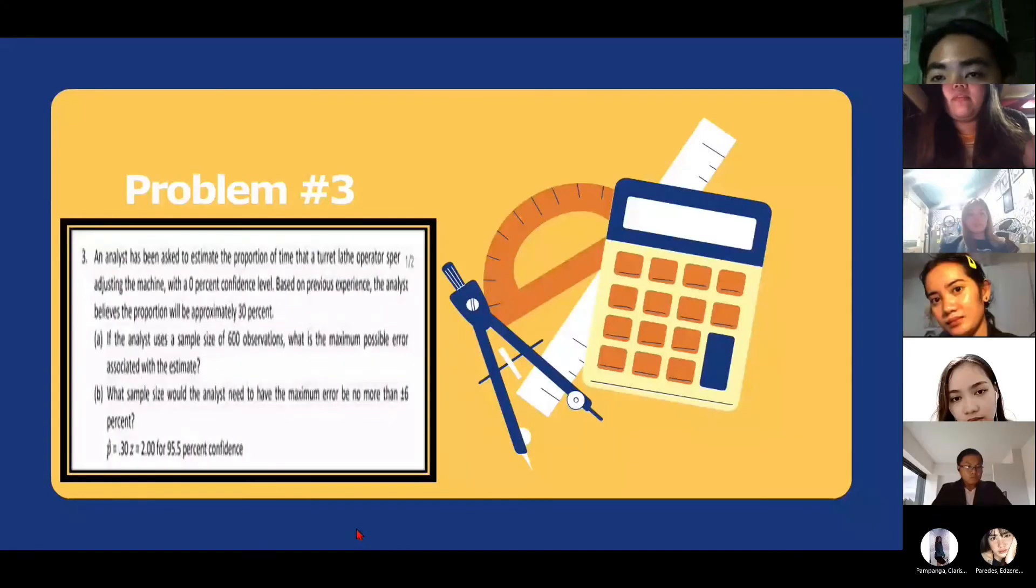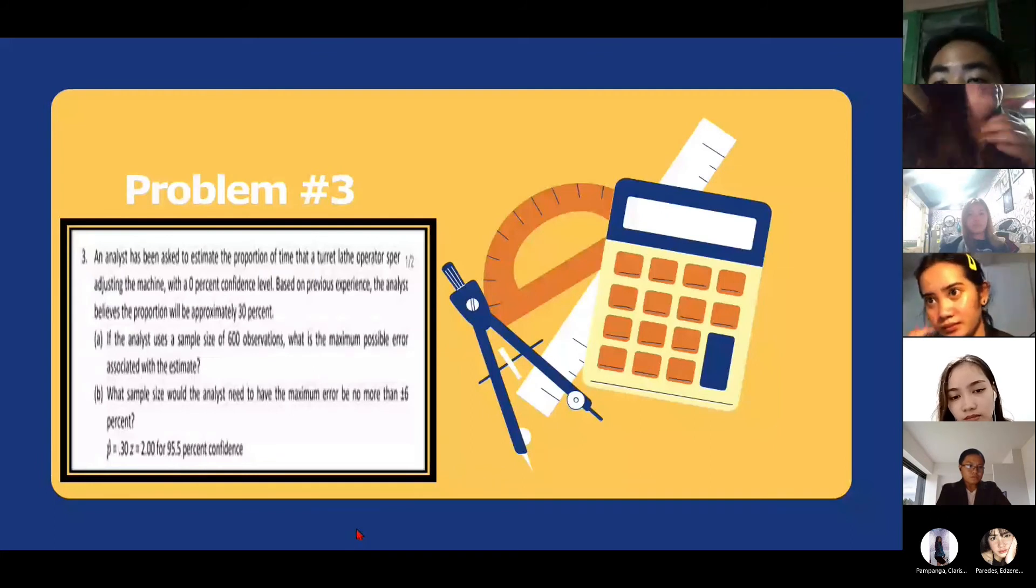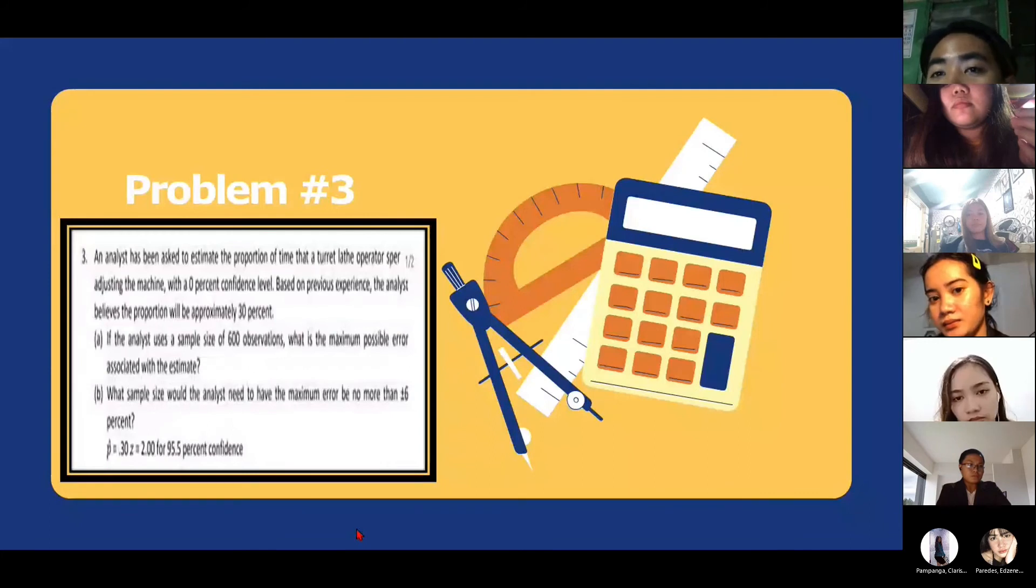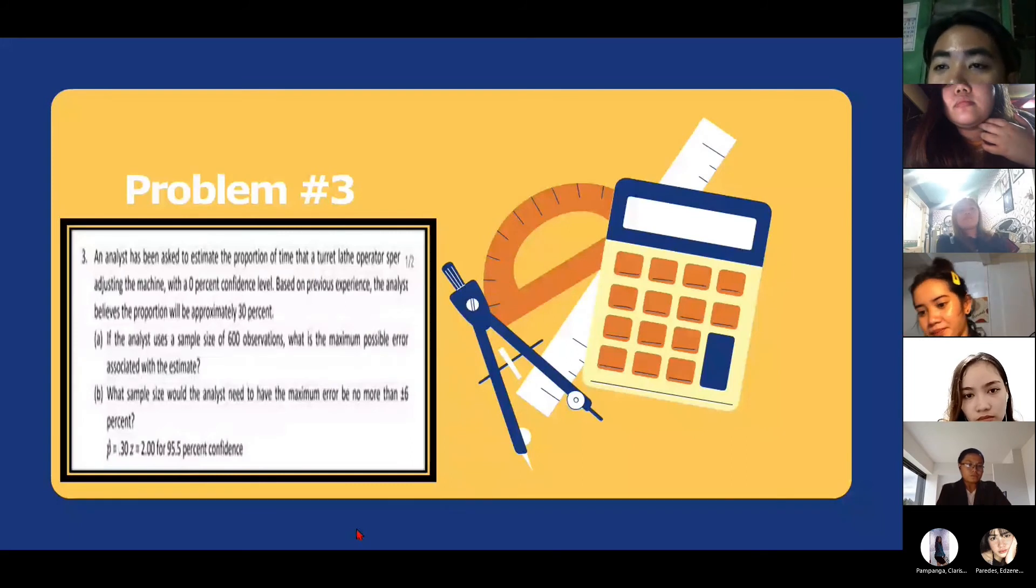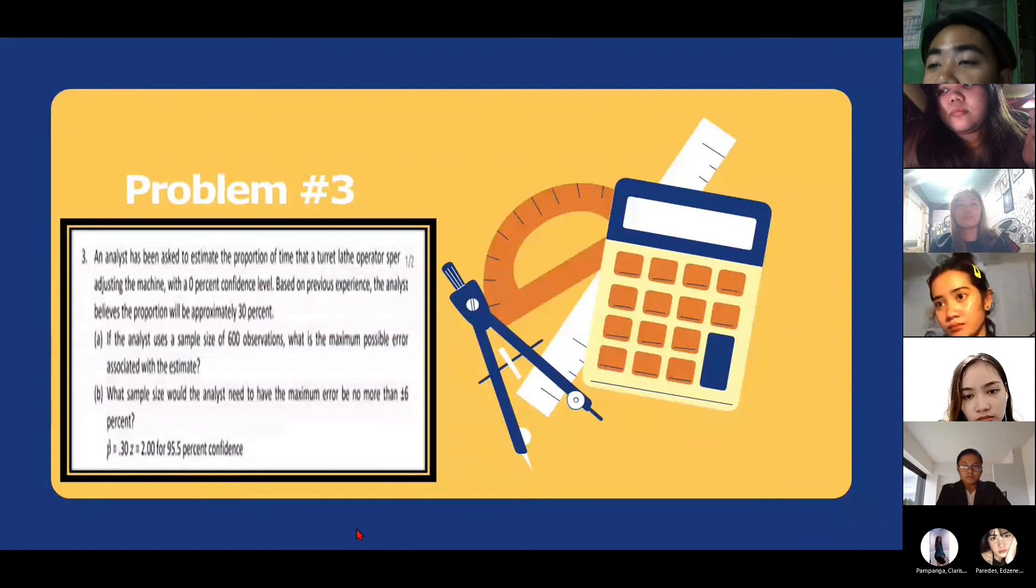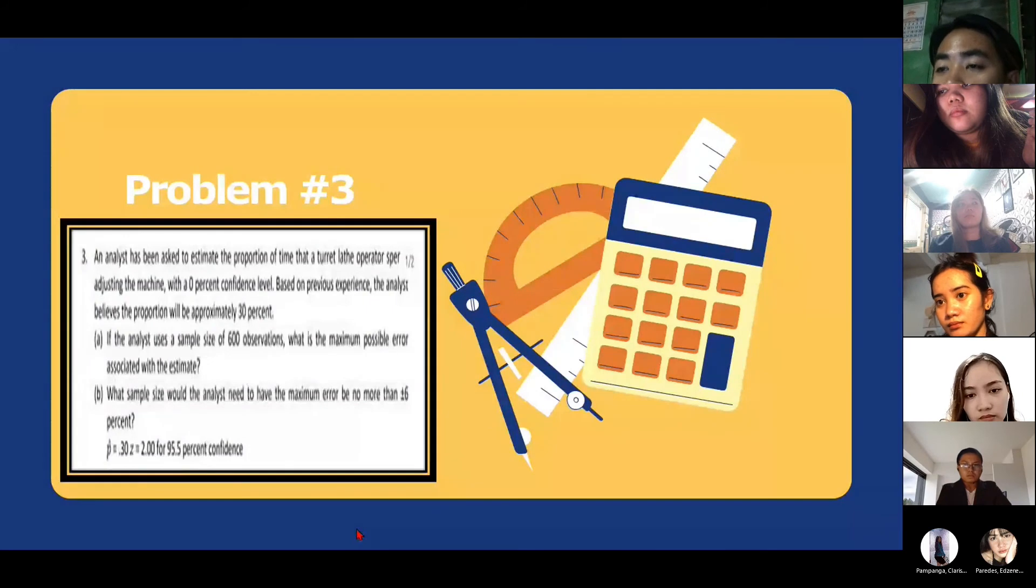Hi, I'm Justin Fernando Alfonso and we're going to explain problem number three. An analyst has been asked to estimate the proportion of time that a turret lathe operator spends adjusting the machine with a 95% confidence level. Based on previous experience, the analyst believes the proportion will be approximately 30%. If the analyst uses a sample size of 600 observations, what is the maximum possible error associated with the estimate? And what sample size would the analyst need to have the maximum error be no more than positive-negative 6%?